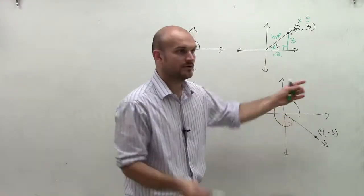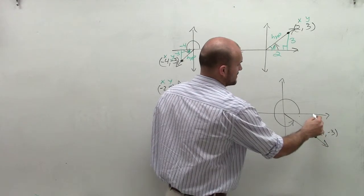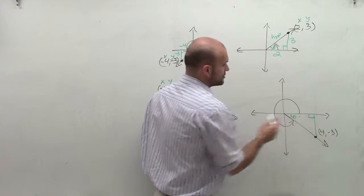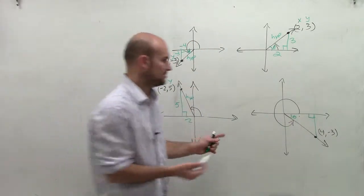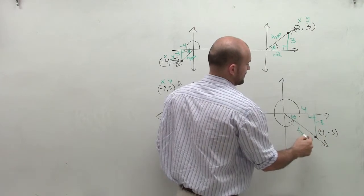Lastly, let's do this one. Remember, just create a perpendicular line with your horizontal axis. That's going to create your 90 degree angle. Then, your central angle is always going to be your theta. From there, you can always determine that's going to be 4, negative 3, and your hypotenuse.